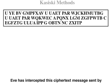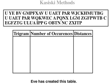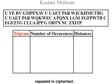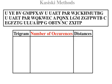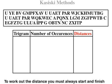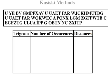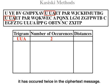Eve has intercepted the ciphertext message sent by Alice to Bob. Eve has created a table. Trigrams are identical strings of characters that are repeated in ciphertext. The number of occurrences means how many times the trigram has occurred. To work out the distance, you must always start and finish on the same character within the trigram. The first trigram is U-U-A, and it has occurred twice in the ciphertext message.